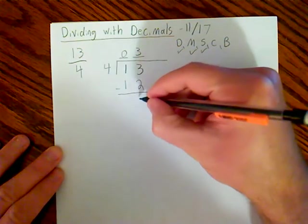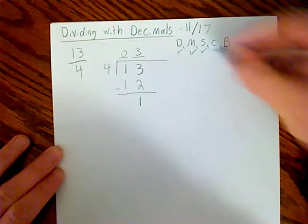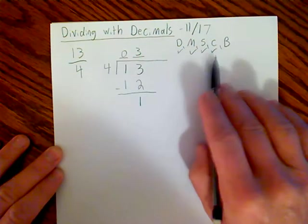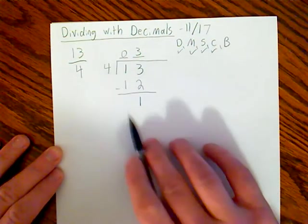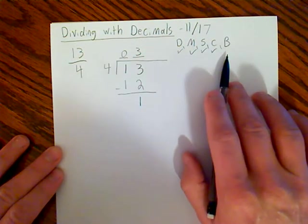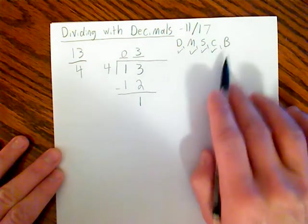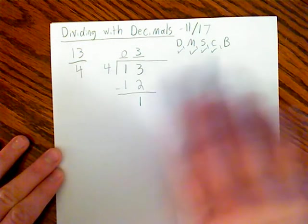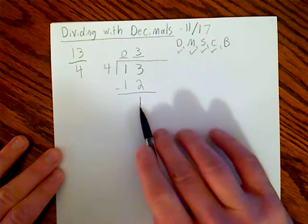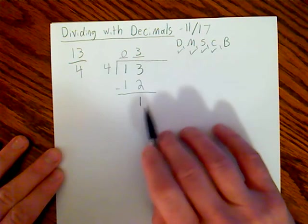Multiplying 3 times 4 is 12. Check. I'm going to subtract now. 13 minus 12 is 1. Check, check. 1 is less than 4, so we're good. And then bring down.